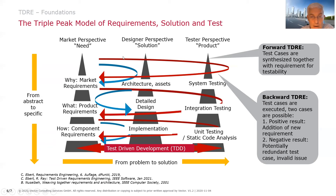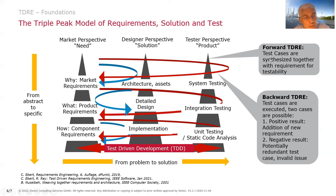On the way from requirement to solution and test, we have two directions. Going from left to right — from requirement to product — is what we call forward TDRE: a test case is generated and becomes the baseline for the underlying requirement. In the best case, you simply use your requirements tool like DOORS and write the requirement directly as a test case. We have done many such projects and it works perfectly. It is like writing a unit test case and putting it in the header of your C module function — it gives you a description of your code, and here the same: we write a requirement in DOORS or in the test suite and use it as the basis which is then the test case.